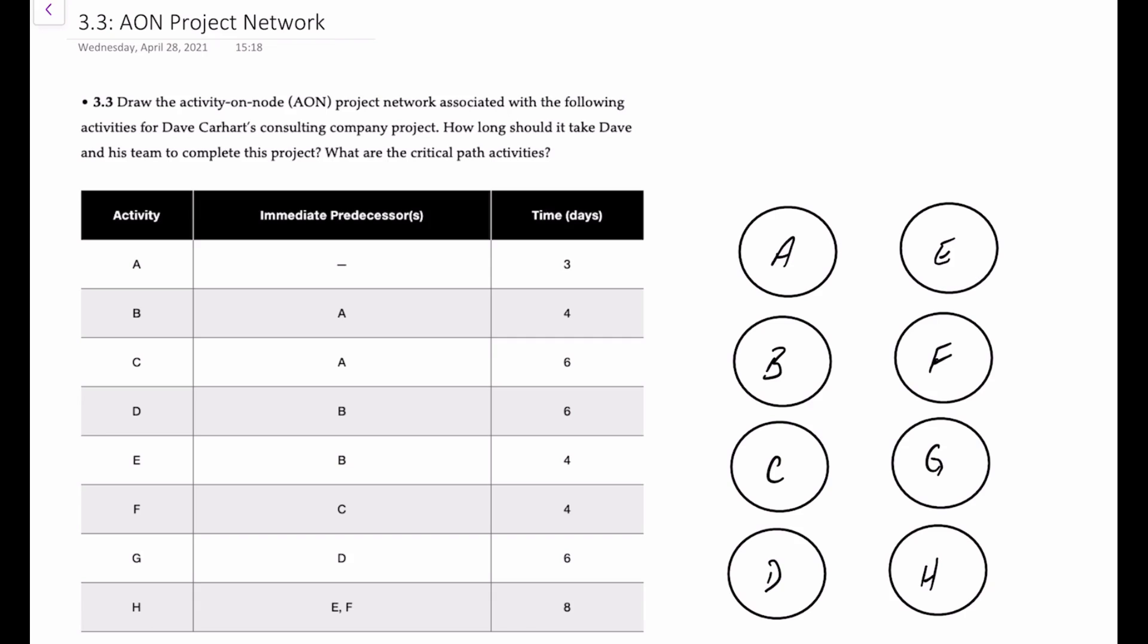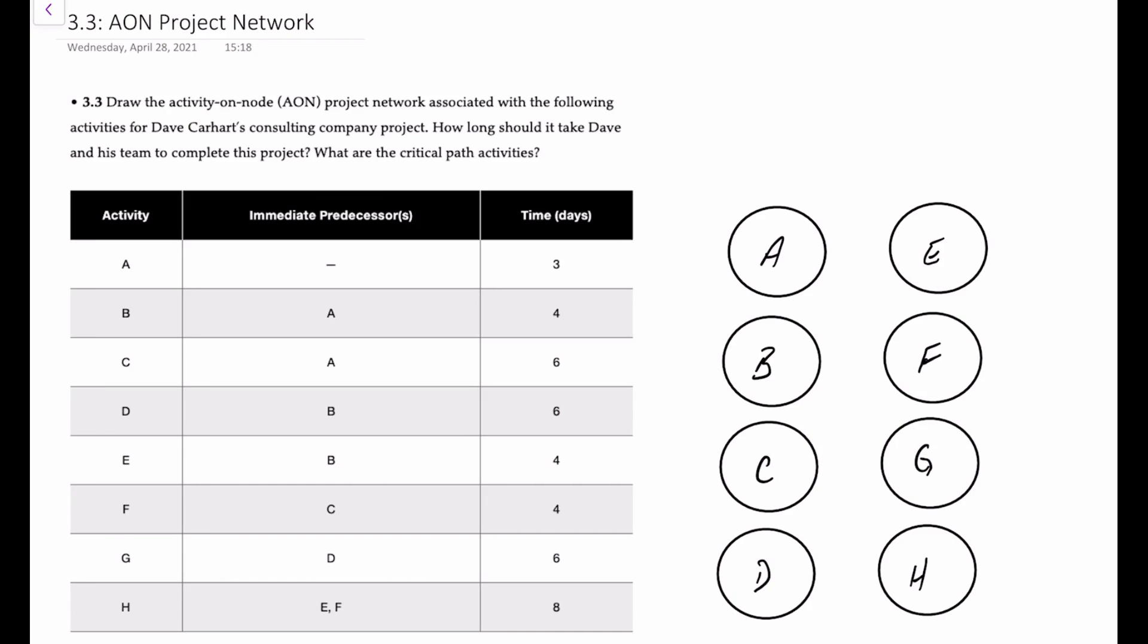Hello there. In this video, I'll illustrate how to draw an AON or Activity on Node project network for a series of eight activities and then identify the paths as well as the critical path. The table you see here provides us all of the information on the eight activities, the immediate predecessors, and how long each activity takes in days.